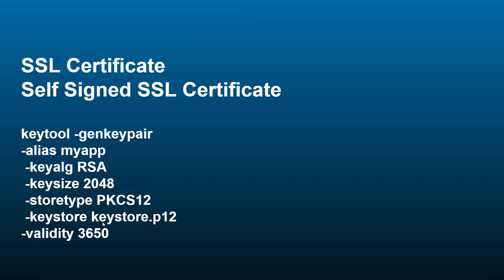'-keystore' is followed by the keystore filename — this is the file that gets generated after executing the command and it stores the SSL certificate inside. If you purchase a certificate from outside, you would create this keystore and insert that certificate into it using a different command. After this there is '-validity 365', which sets the validity period of the certificate.